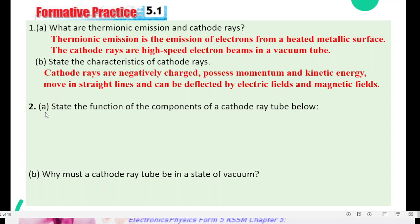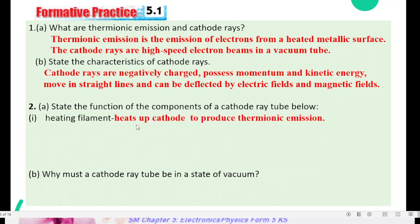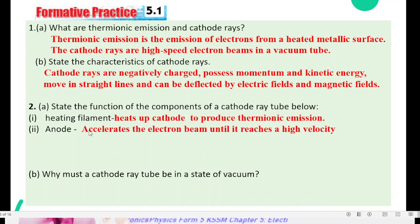Number 2A, state the function of the components of cathode ray tube below. First one, heating filament. It is used to heat up cathode to produce thermionic emission. Anode is to accelerate electron beams until it reaches high velocity.